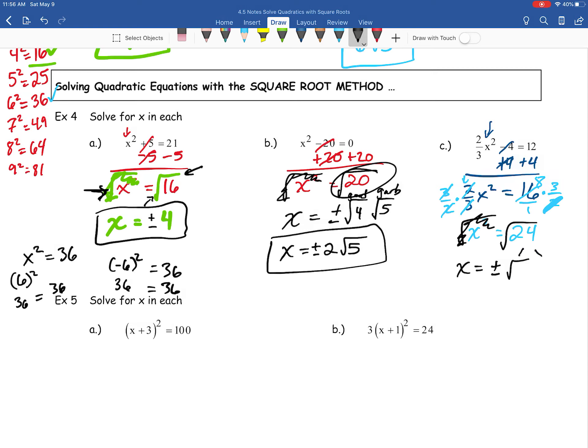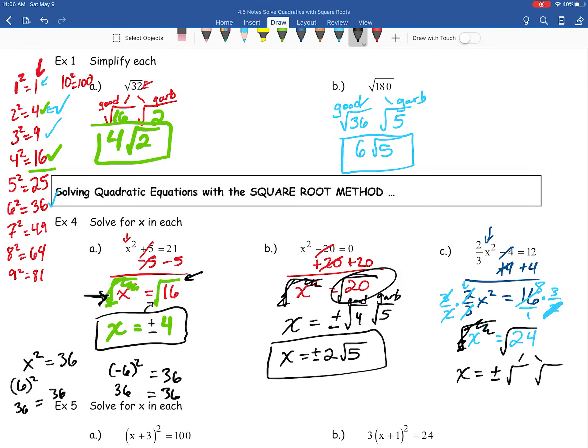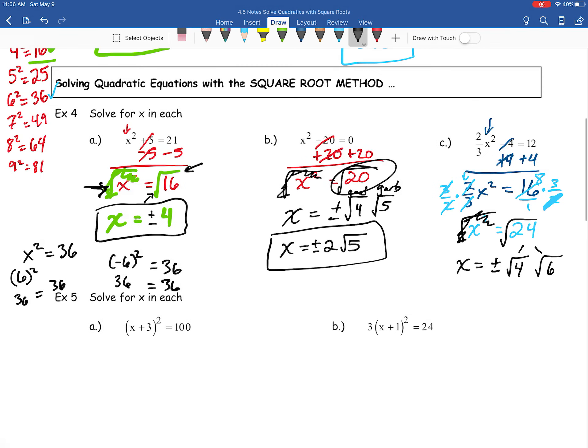So now we have this number 24. We need to simplify that up, or at least ask ourselves, can we make that into a good and a garbage square root? We actually can. So we're going to break this value up and using our list of perfect squares, it's divisible by four, not nine, not 16. And then once we get to 25, we're already past our number. So we're going to go ahead and use four as our perfect square. And the garbage is six.